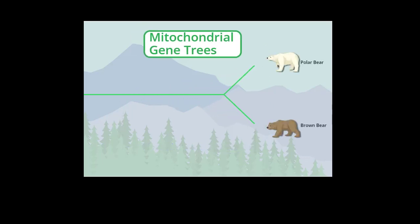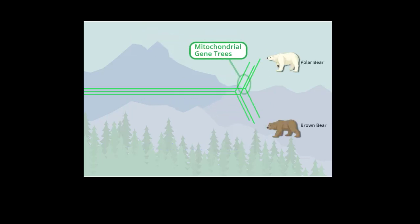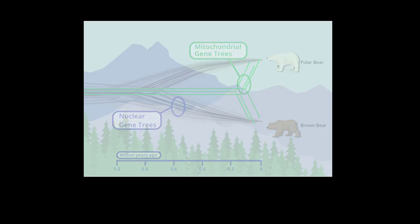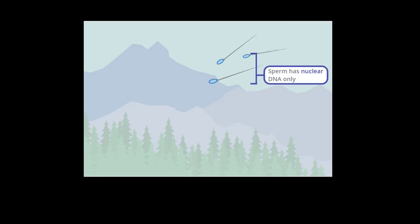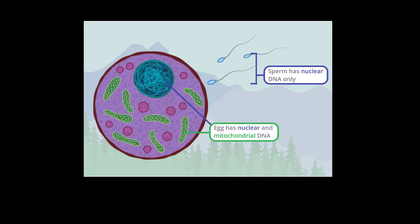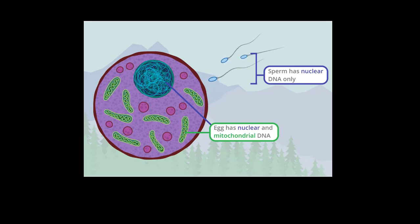Compared to nuclear DNA, mitochondrial gene trees suggest that polar bears and brown bears diverged much more recently. So which DNA evidence is right? It turns out, they both are. While nuclear DNA comes from both parents, mitochondrial DNA is inherited differently — it passes from the mother through her egg to offspring. Mitochondrial DNA holds information only about the maternal side, going back many generations.